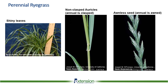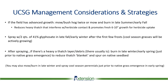Perennial ryegrass is very widespread and a very common forage for cattle and livestock. It has somewhat shiny leaves with vibrant green vegetation and a bit of a sheen to it in the field. We can very easily differentiate perennial ryegrass from annual ryegrass: perennial ryegrass has unclasped auricles, whereas annual ryegrass has clasped auricles that begin to wrap around the stem. Also, perennial ryegrass has awnless seed, while annual ryegrass has awns — a small spike or hair-like structure off the end of each seed produced.